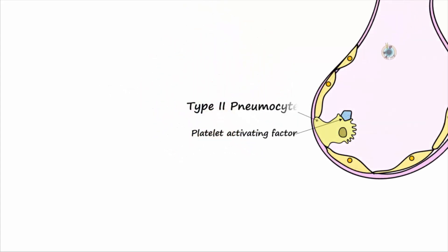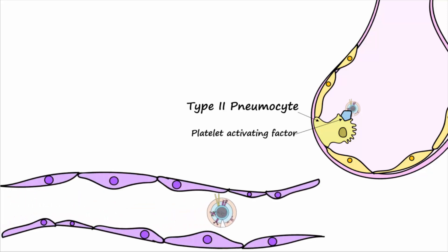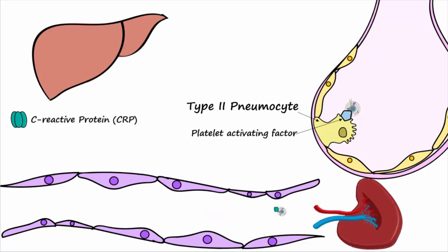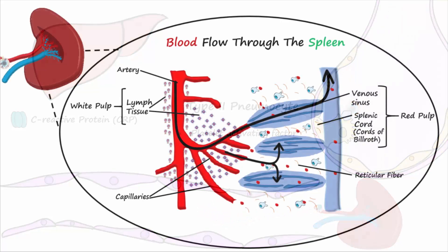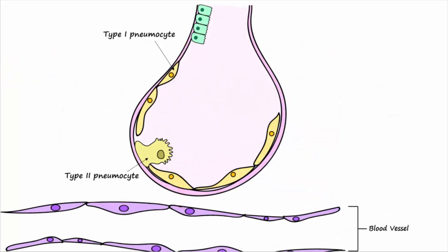If the bacteria gain access to the bloodstream, C-reactive protein, or CRP, produced by the liver acts as an opsonin by binding to the bacteria to enhance phagocytosis. Many of these opsonized bacteria are phagocytosed in the spleen by splenic macrophages.